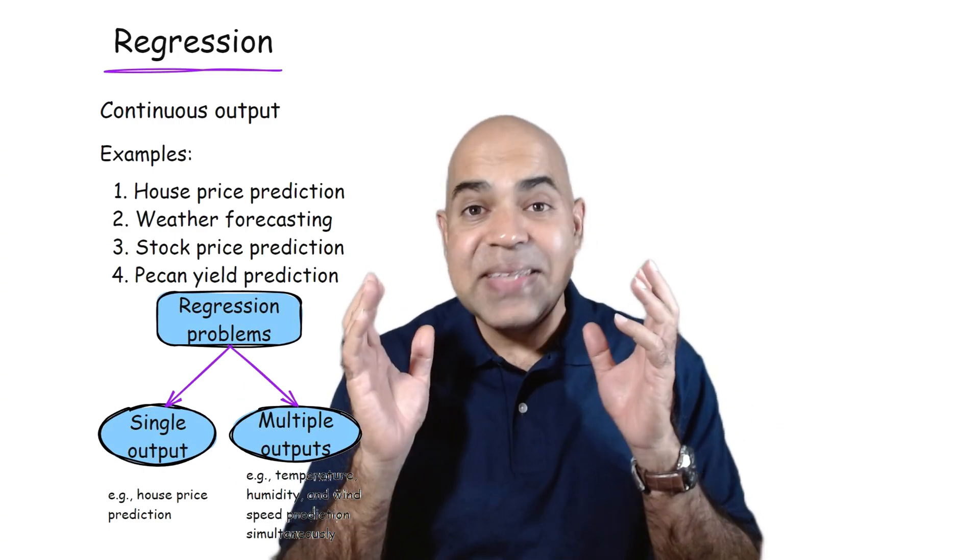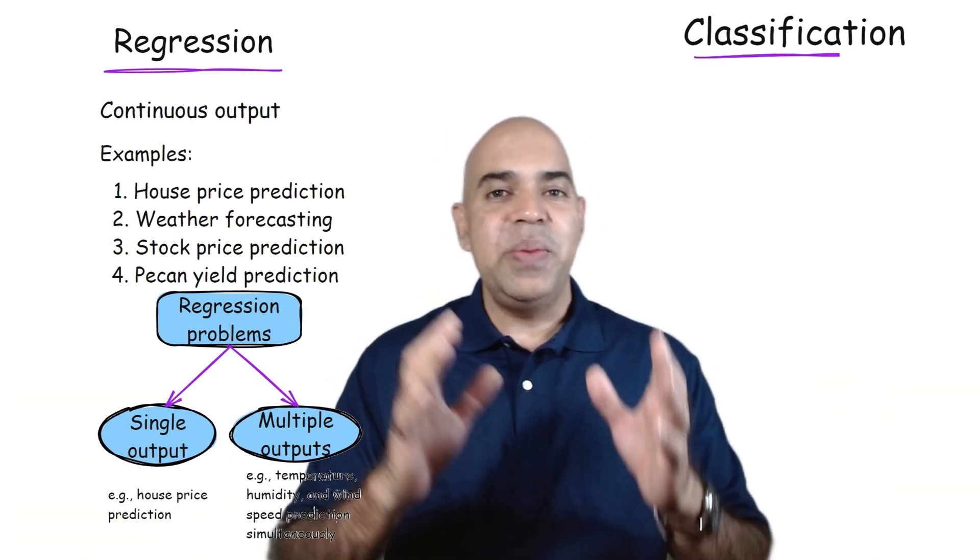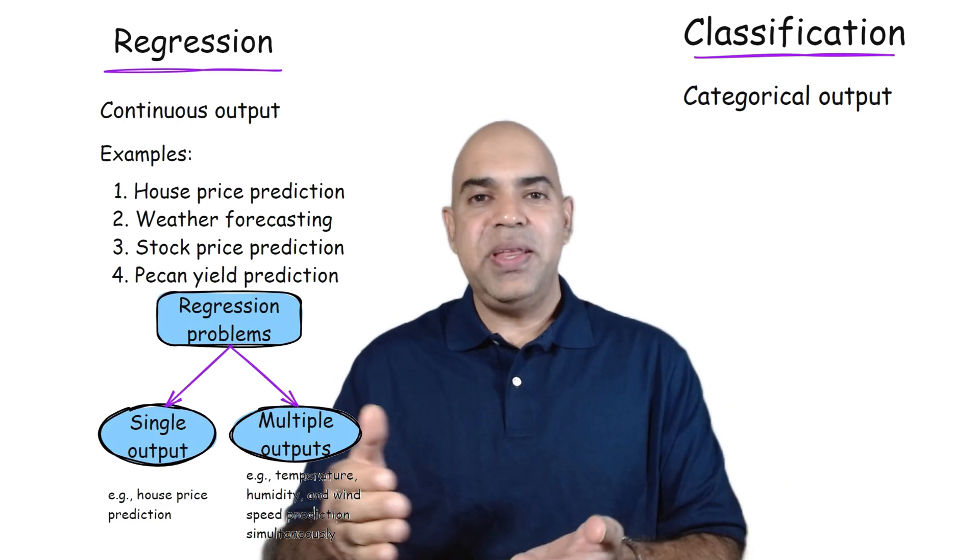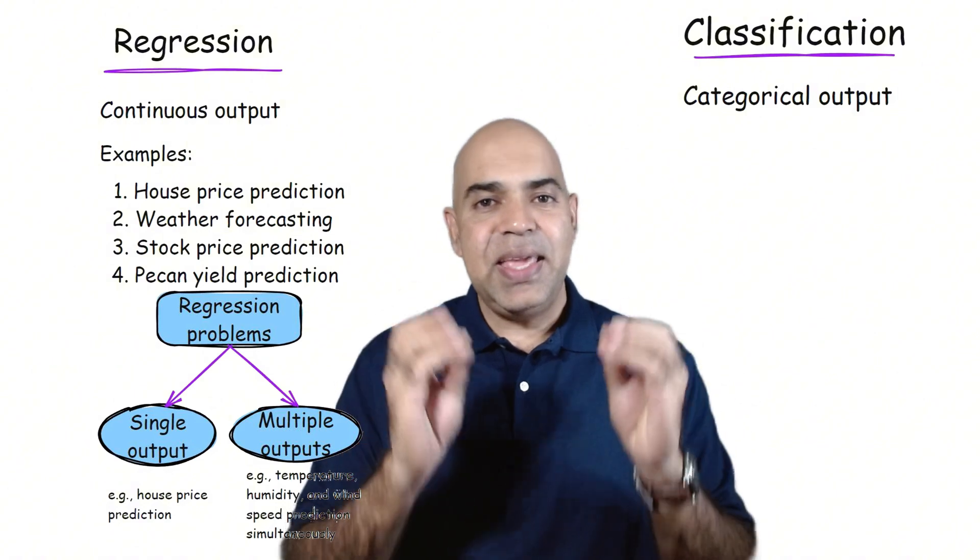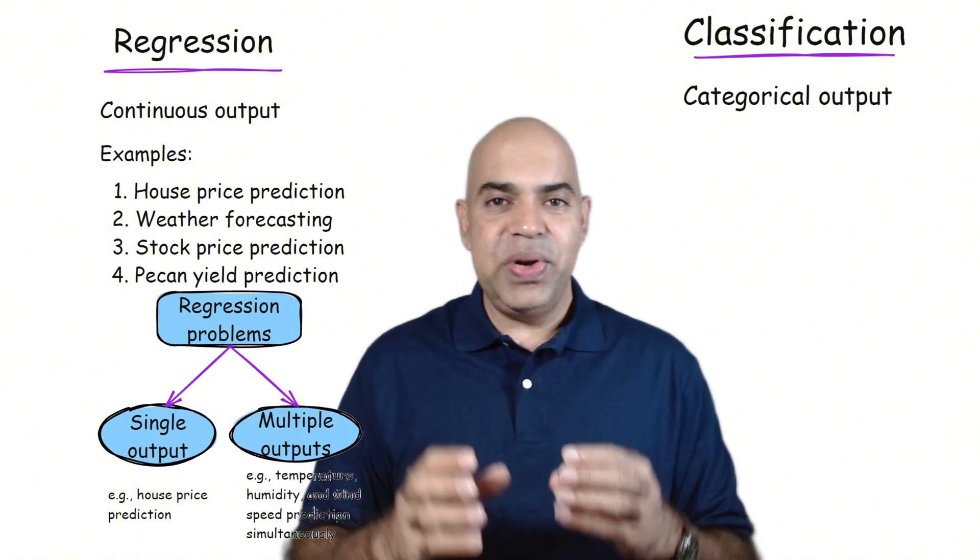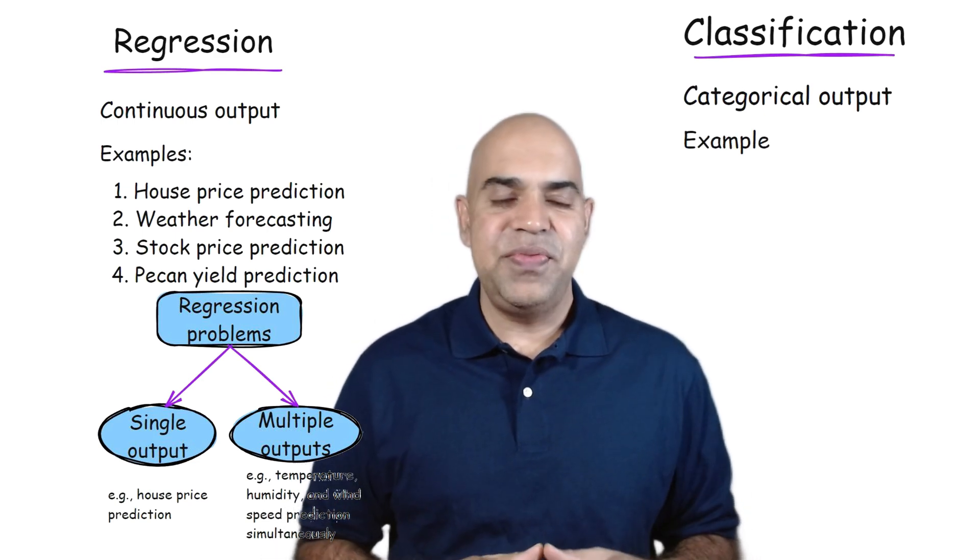Now, what is a classification problem? A classification problem involves predicting a categorical output. Instead of predicting a continuous value, the model must assign each input to one of several discrete categories or classes. Let us discuss some examples of classification problems.